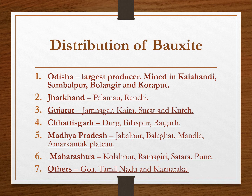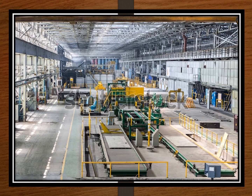Other minor producers are Goa, Tamil Nadu, and Karnataka. The largest integrated aluminium plant in India is at Renukoot in Uttar Pradesh. It gets its supply of bauxite from the Amarkantak plateau and Ranchi. This plant is under Hindalco Industries Limited, a subsidiary of the Aditya Birla Group, headquartered at Mumbai, Maharashtra. Hindalco is one of the world's largest aluminium rolling companies and one of the biggest producers of primary aluminium in Asia.